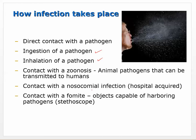Contact with a nosocomial infection - nosocomial means acquired in the hospital, which is where sick people go and where antibiotic-resistant strains of bacteria and pathogens can show up. A fomite is an object that can hold on to pathogens - hospitals use stainless steel and smooth surfaces because rough surfaces can harbor bacteria or fungi that get passed on. A stethoscope is a classic example of a fomite.